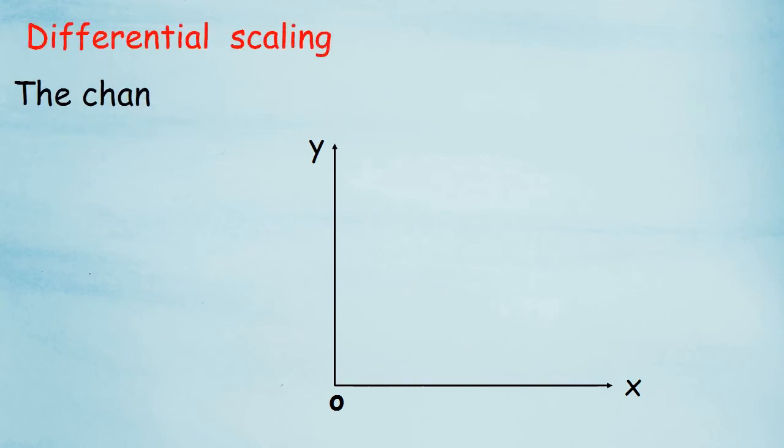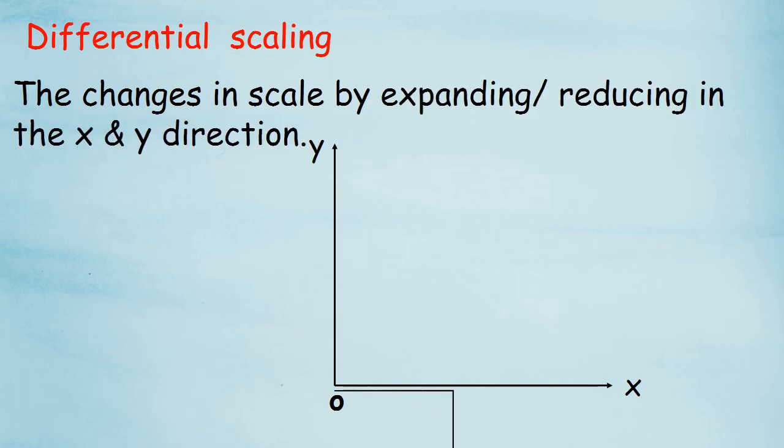Last but not least is the differential scaling. Everyone knows differential scaling is nothing but changes in the scale, whether it can expand or it can reduce in the X and Y direction. Same square box with the origin O and XY coordinates. The red line is showing the expansion of the square, and the dotted blue line is showing the reduction of the square box.